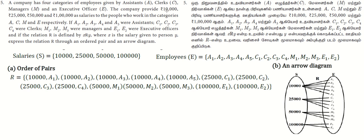Managers M, and Executive Officers E. The company provides 10,000, 25,000, 50,000, and 1,00,000 as salaries to people who work in categories A, C, M,